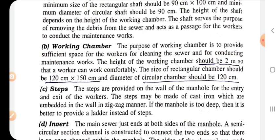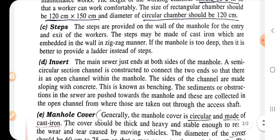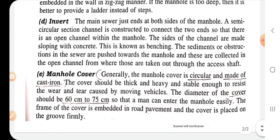Steps are provided on the wall of the manhole for the entry and exit of workers. The steps may be made of cast iron, which are embedded in the wall in a zigzag manner. The main sewer ends at both sides of the manhole, and a semicircular section channel is constructed to connect both ends, creating an open channel within the manhole. The sides of the channel are made sloping with concrete — this is known as benching.